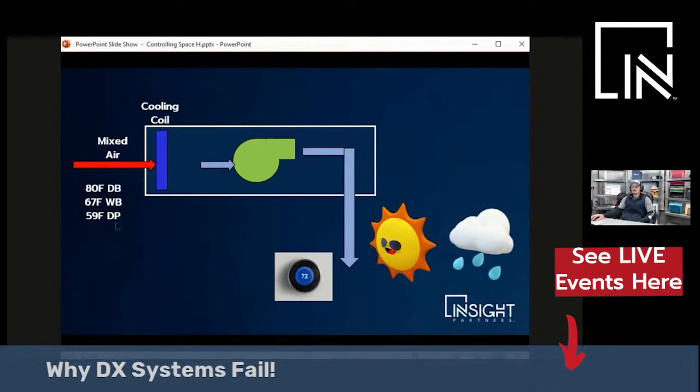So the dew point of this air is 59 degrees. Here's what's important. To dehumidify this air, the cooling coil needs to be at a lower dew point than the dew point of the air. So if this cooling coil is, let's say, 45 degrees, you'd probably get about 52-degree dry bulb off the coil. So the temperature of this coil is colder than the dew point of the incoming air.